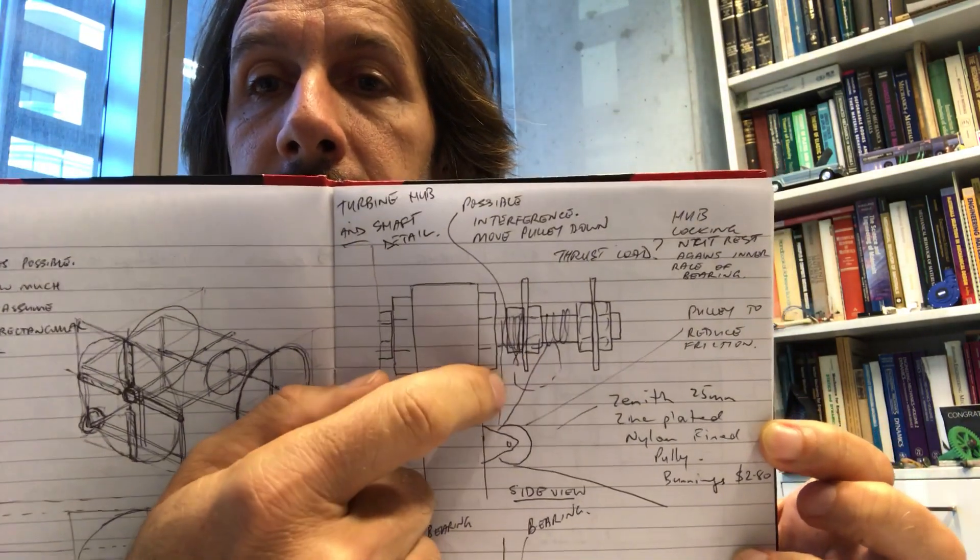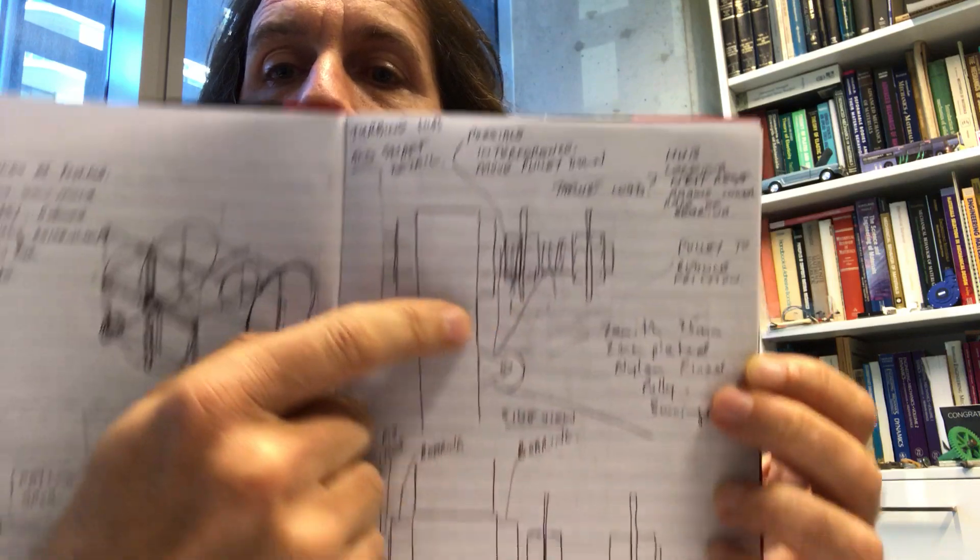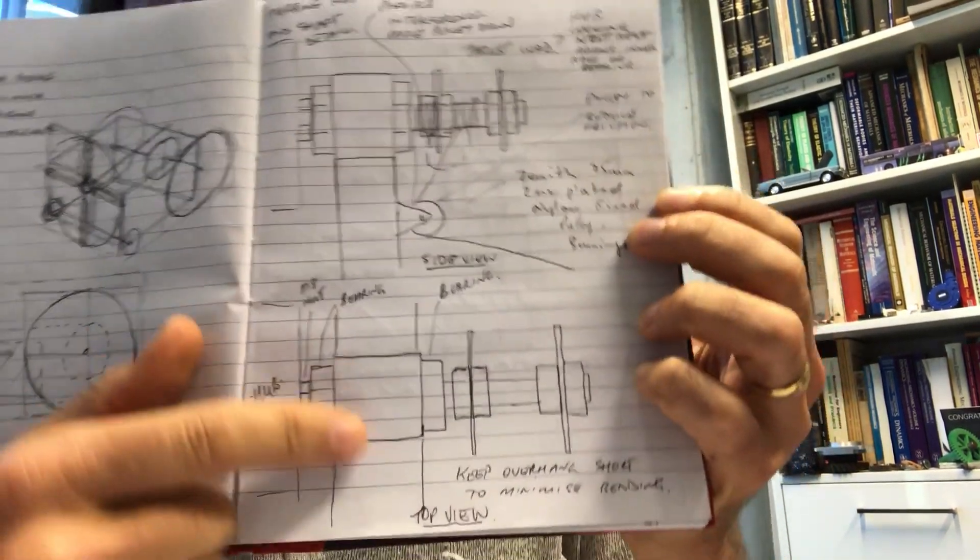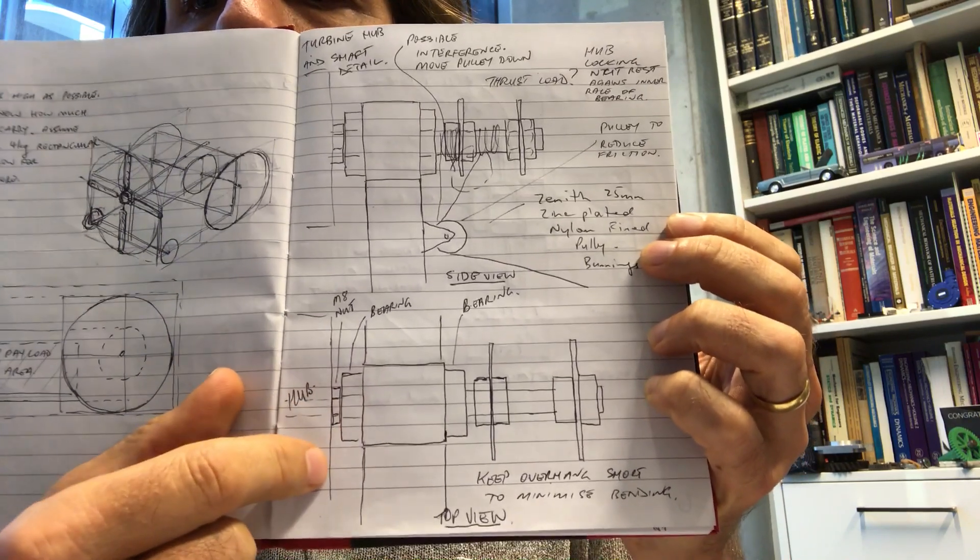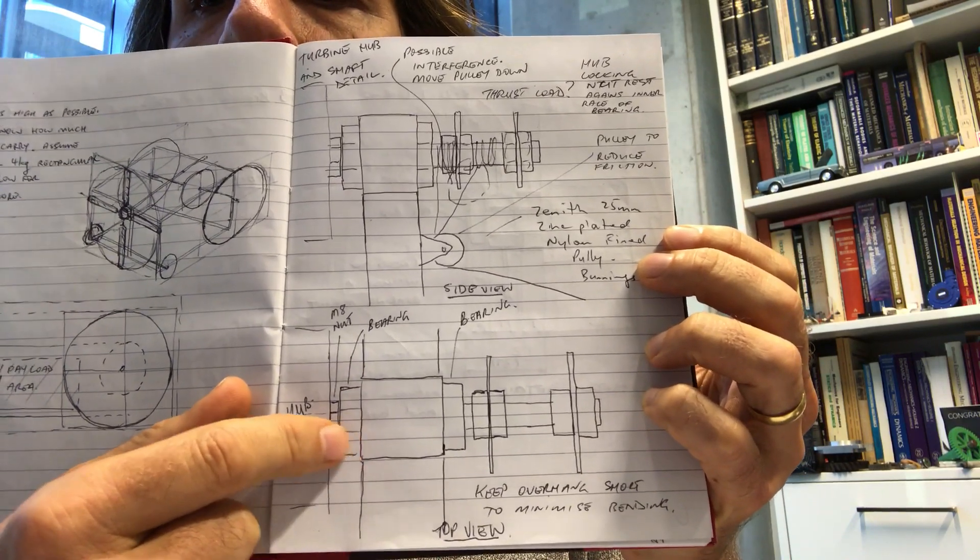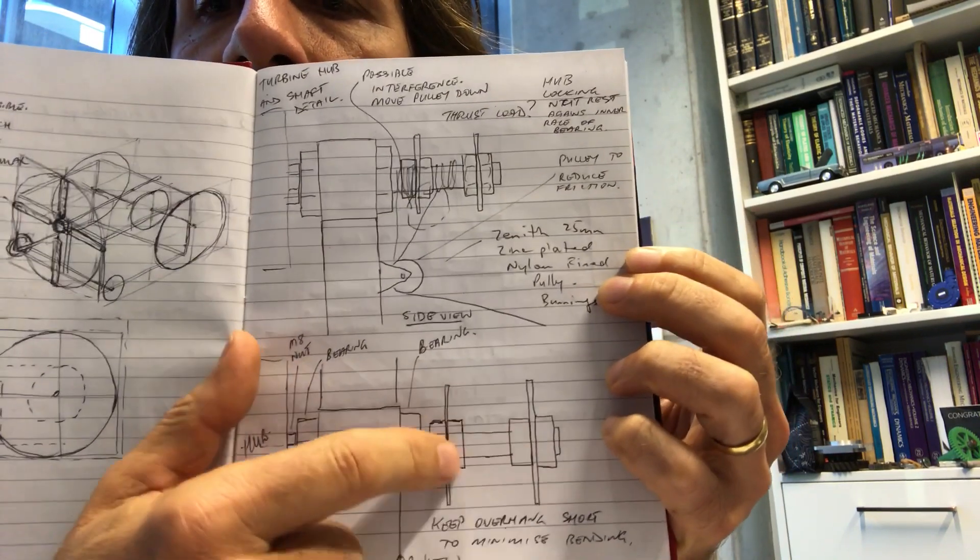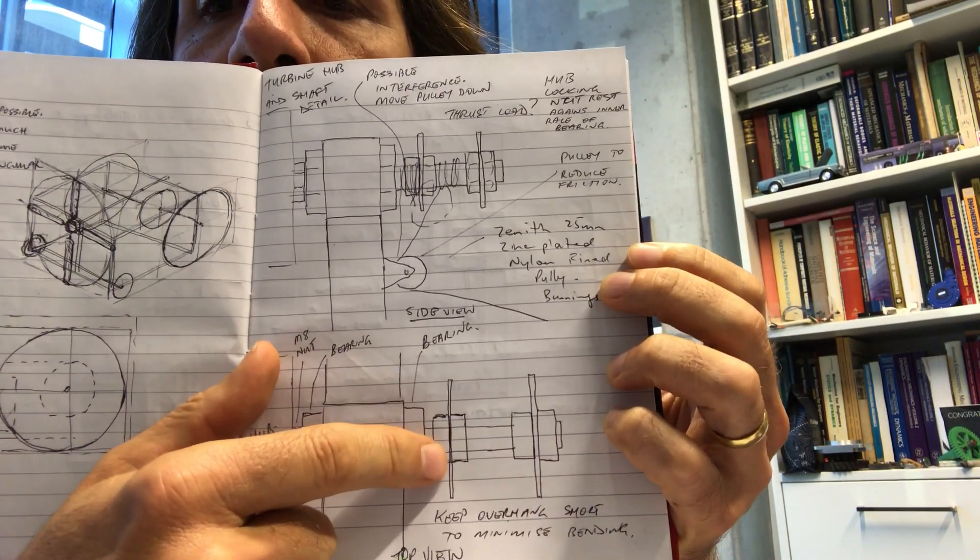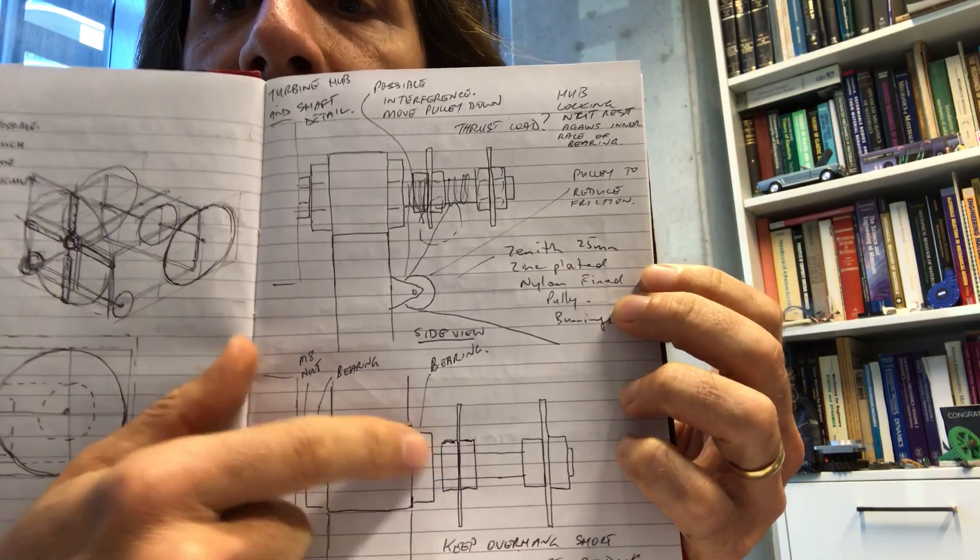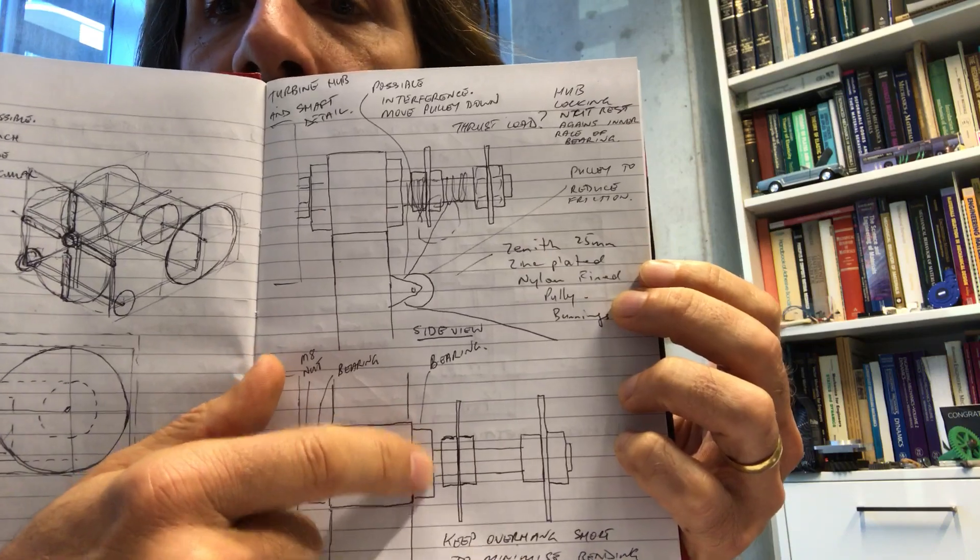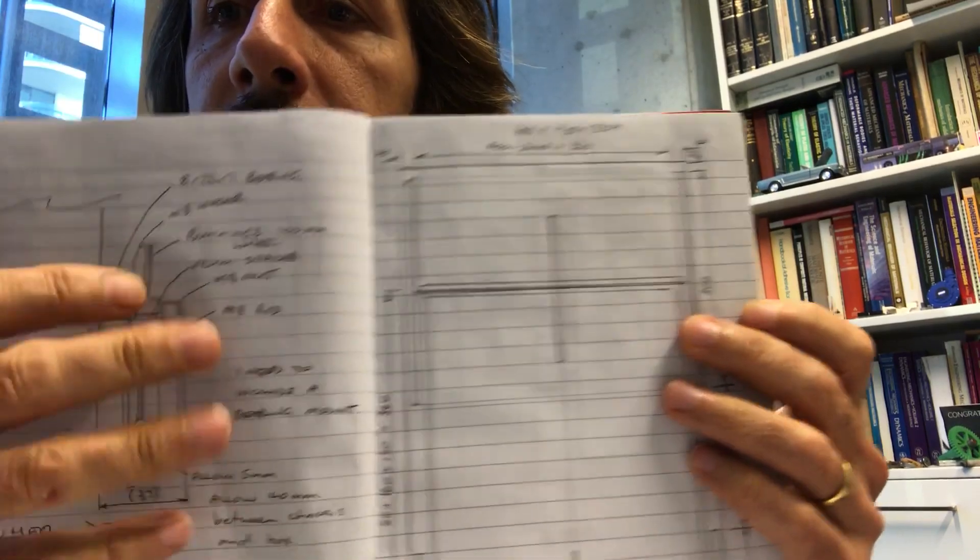The other thing is that having drawn this, I can see that there might be some interference here that I need to take care of. What else have I got here? So this is looking down from the top. Other thing that I've needed to make sure I do is to keep this as close to the bearings as possible to prevent too much bending in the shaft. And I must have the two bearings, you can't get away with just one bearing here, will not do the job.